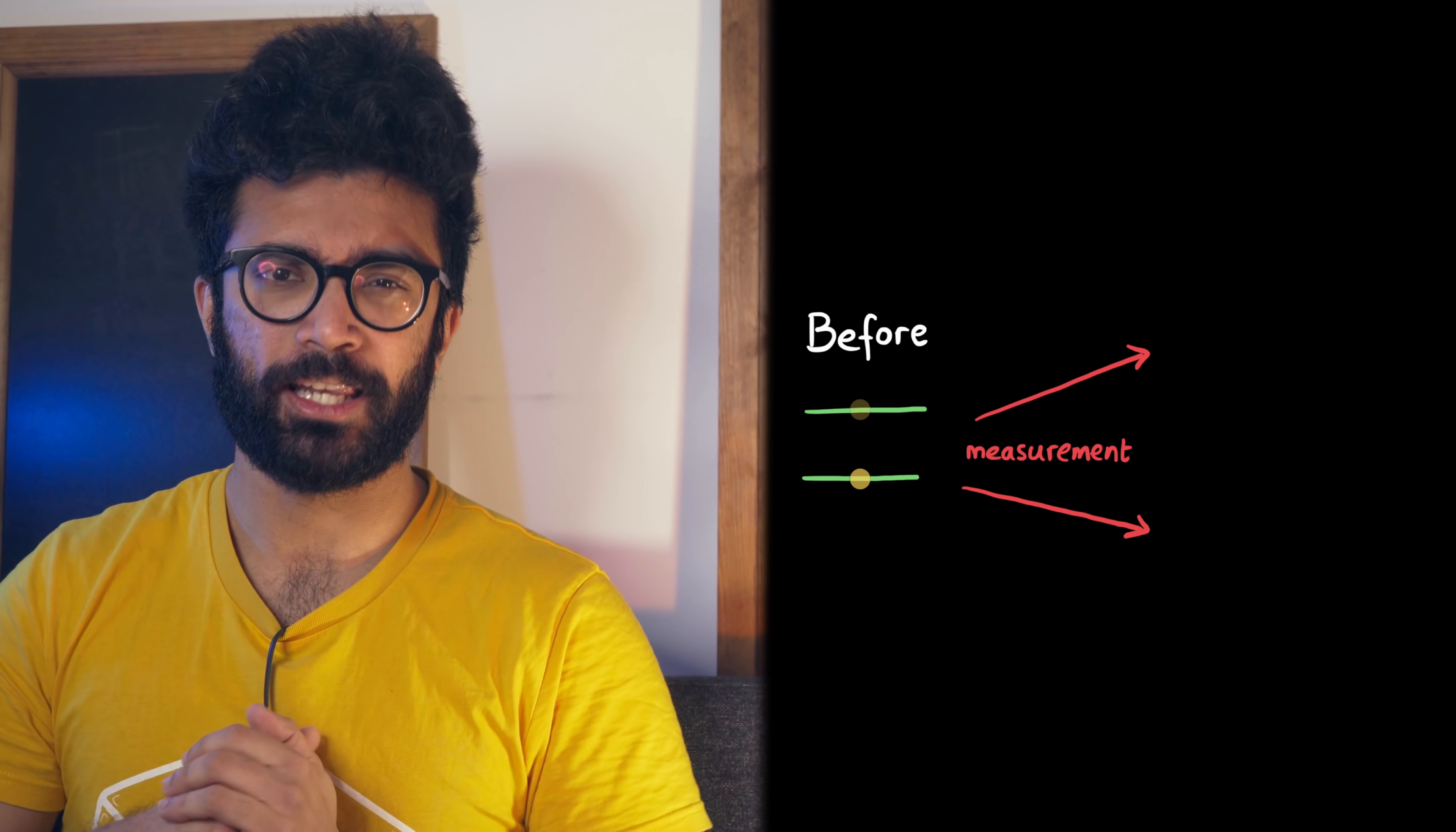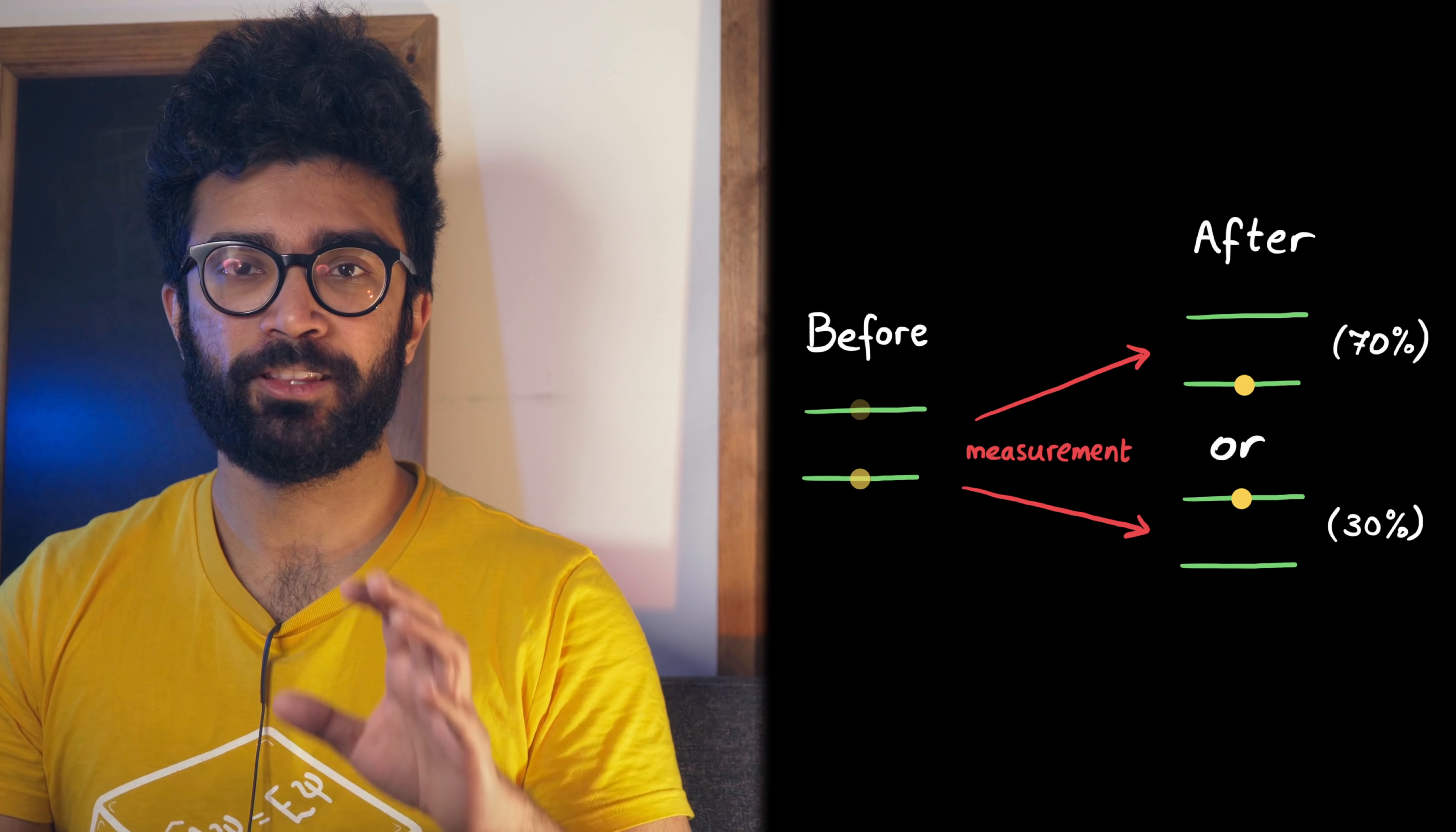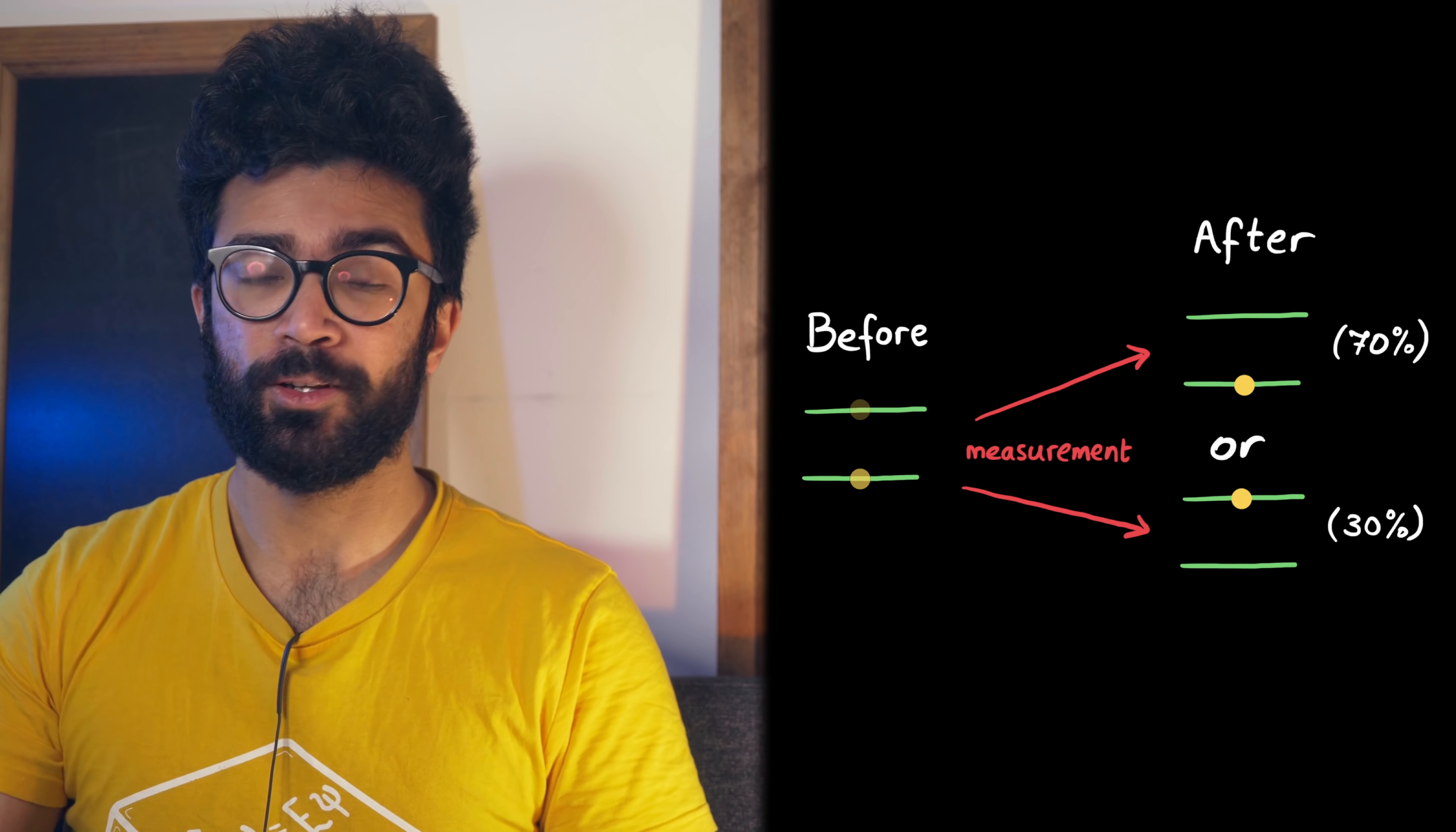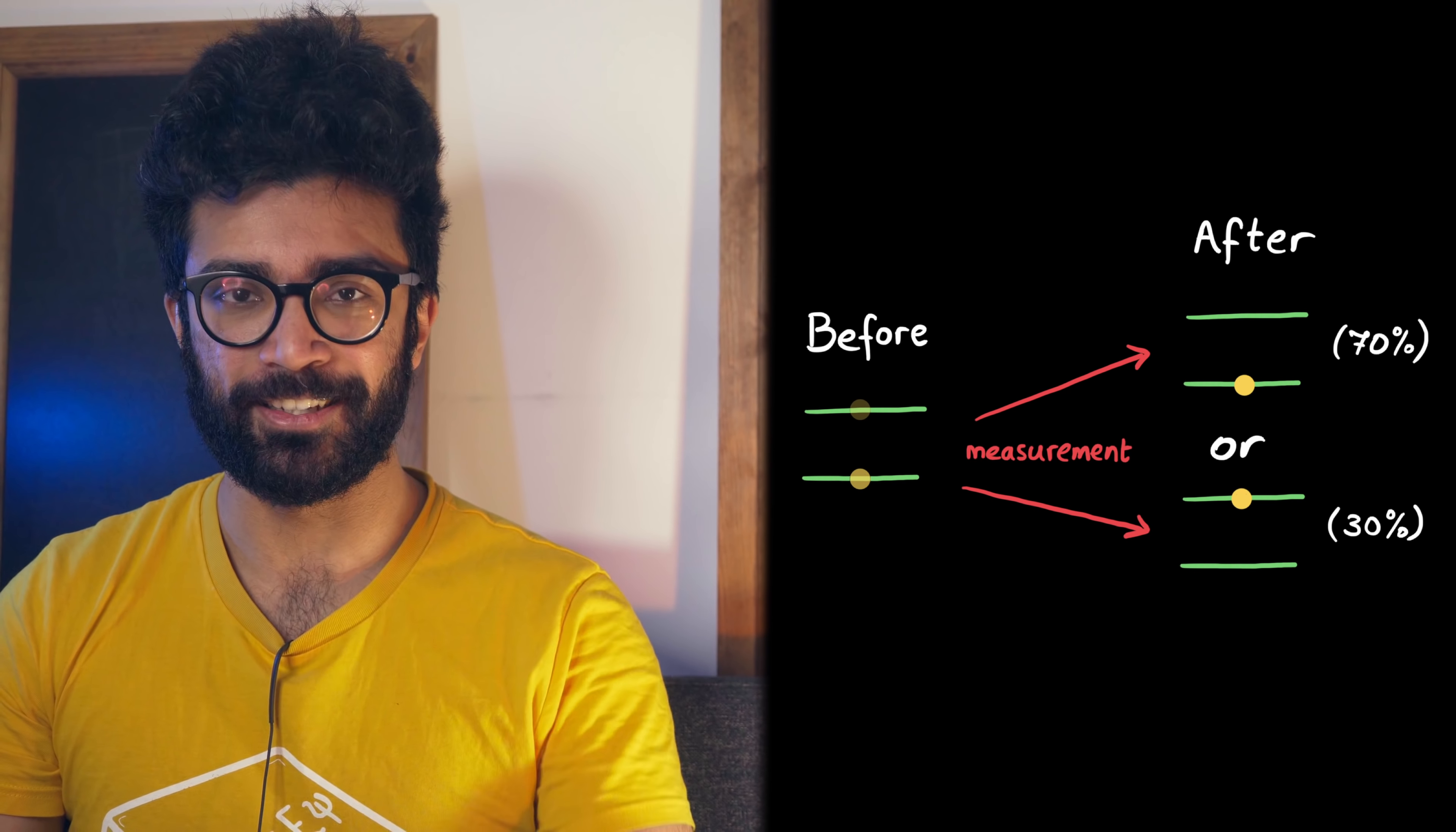But anyway, here's where Einstein comes into the picture. He accepted that we might not just be gaining information when we make a measurement, but he was bothered by the idea that a measurement randomly causes a collapse of the wave function into one of the possible measurement states. He felt like there was probably something hidden that we had not yet discovered that influenced the system to fall into a particular measurement state once we made the measurement. In fact, now's a good time to look at what he actually said in a letter to Max Born in 1926. He said,